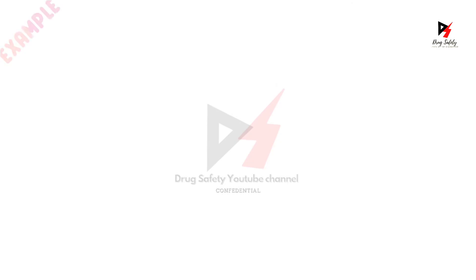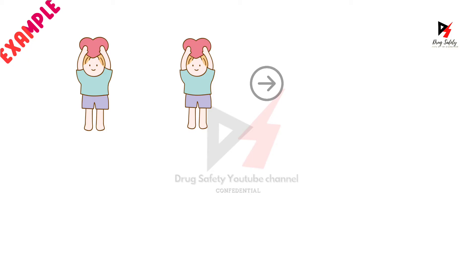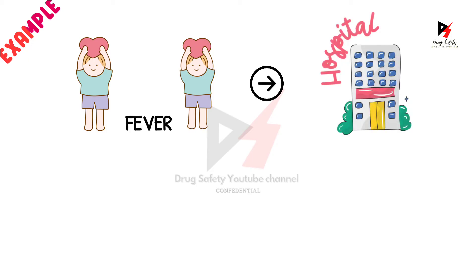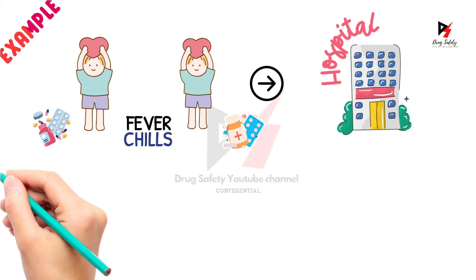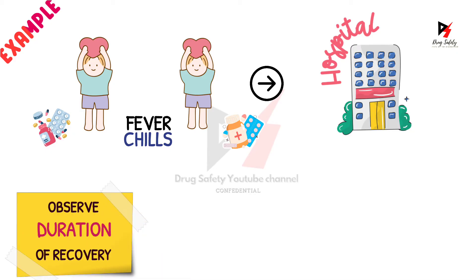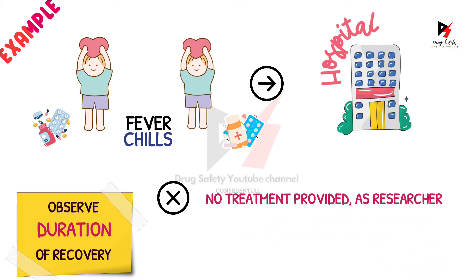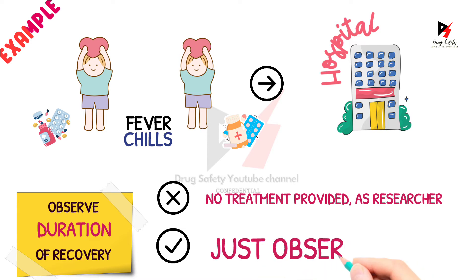Let's take one example to understand this. Let's assume there are two children in the hospital admitted for fever and chills, and they were given two different antibiotic medications as treatment. You could observe the duration of their recovery. As a researcher, you did not administer any medication to the child but instead you simply observed. In this example, you are simply comparing the time taken for each child to recover from fever and chills using two types of antibiotics.